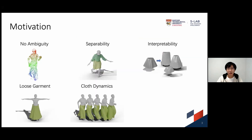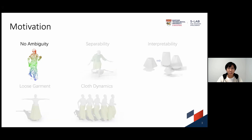To achieve a good and easy-to-use reconstruction, we think there are five important aspects to be considered. Firstly, there should be no ambiguity in terms of scales and reconstructed surfaces. Therefore, instead of using images as our input, we decide to tackle the problem using Point Cloud. Secondly, in order for the reconstructed garments to be retargeted, it should be able to be separated from the body.